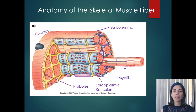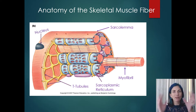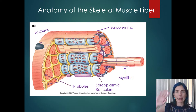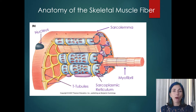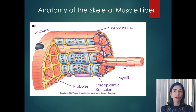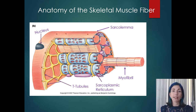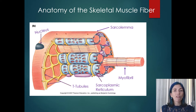You'll also notice the nucleus is off to the side — normally we think of the nucleus as centralized, but here it's pushed out of the way. That's because the nucleus is large and bulky, and this cell wants to maximize its space for myofibrils. Everything else, including the nuclei, gets pushed off to the side.